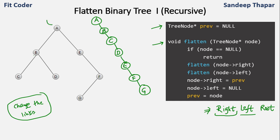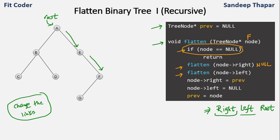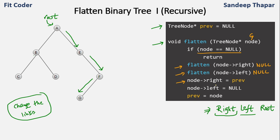We have a flatten function where the first node passed is the root node A. We check if it is null, then we call flatten for the right of A, which is E. Then we go to the right of E, which is F. For F, we process its right which is null — that returns. Then we call for the left of F, which is G. We call flatten for right and left of G, both null, so those return. We set right of G to null (since previous was null), left of G to null, and set previous to node G.